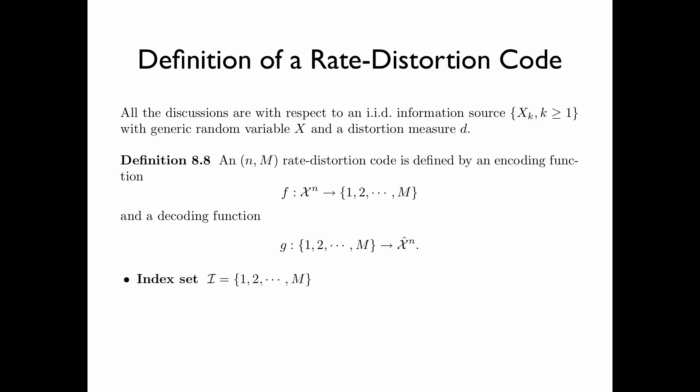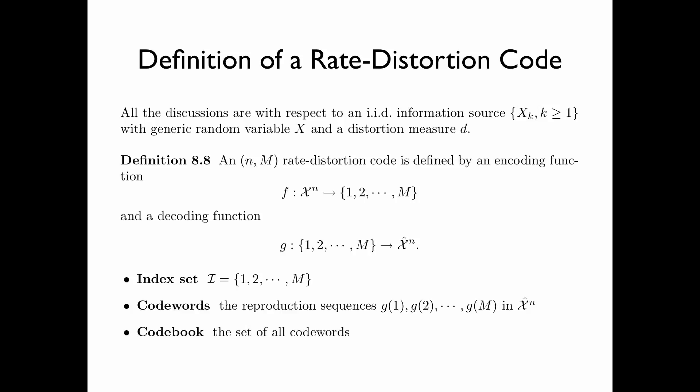We will use I to denote the index set {1, 2, ..., M}. The reproduction sequences g(1), g(2), ..., g(M) of length n are called codewords. And the set of all codewords is called the codebook.